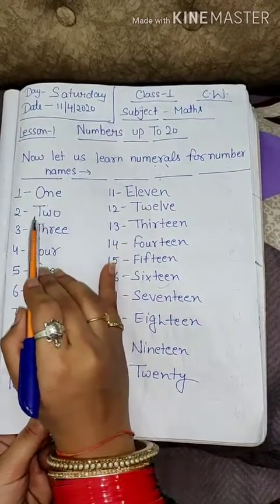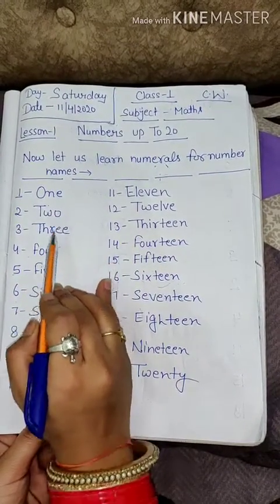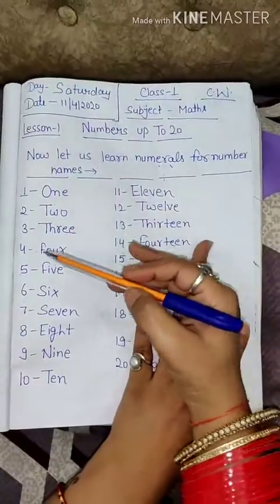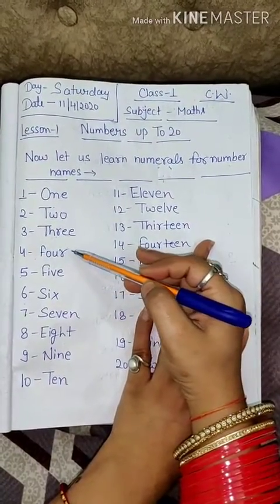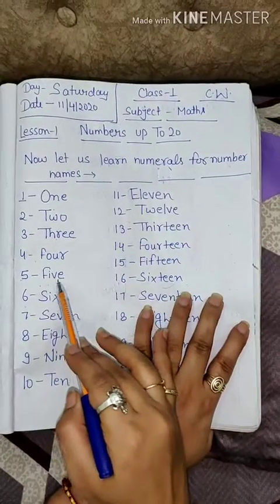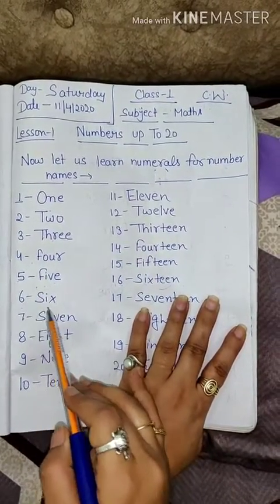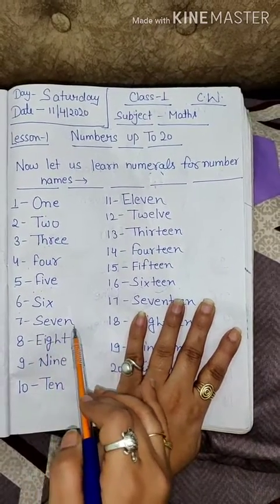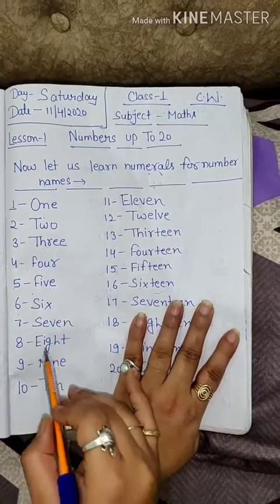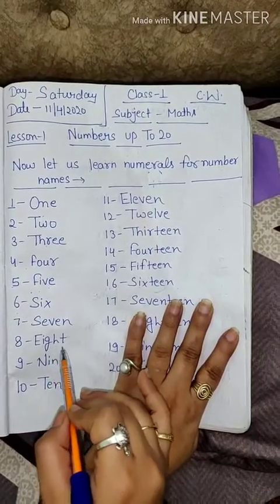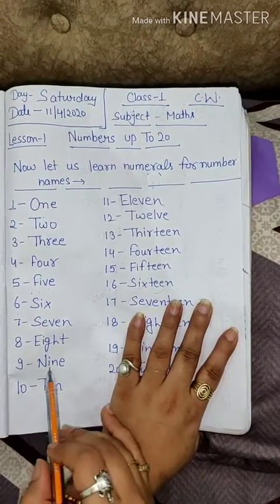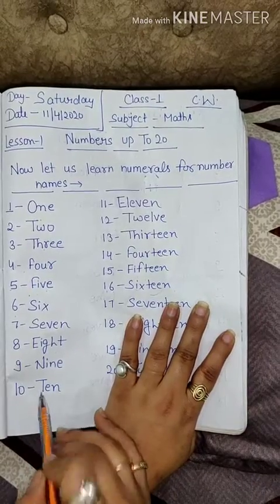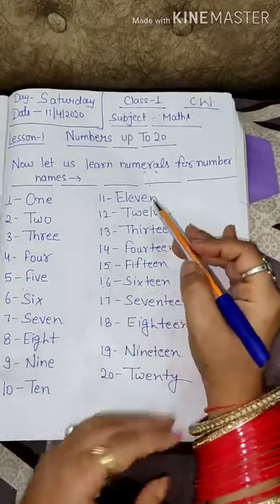1 — ONE. 2 — TWO. 3 — THREE. 4 — FOUR. 5 — FIVE. 6 — SIX. 7 — SEVEN. 8 — EIGHT. 9 — NINE. 10 — TEN.